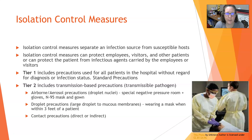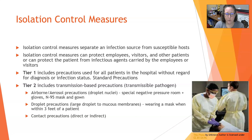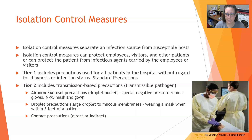Tier one isolation control measures include precautions used for all patients in the hospital without regard to diagnosis — that is the standard precautions: wearing gloves whenever you interact with patients, plus a face mask and maybe a gown. The tier two level includes transmission-based precautions, used when a patient has a transmissible pathogen — MRSA, TB, COVID, or similar. Under tier two, airborne or aerosol precautions require the patient to be in a special negative pressure room, and anyone entering must wear gloves, N95 masks, and gowns at a minimum.